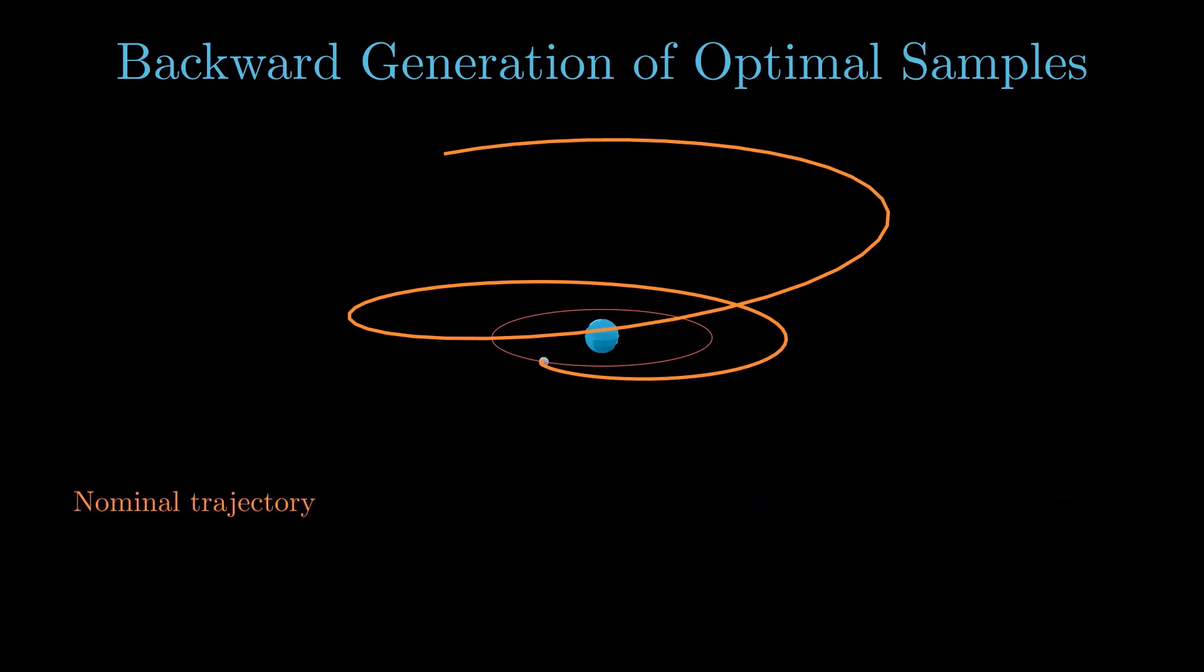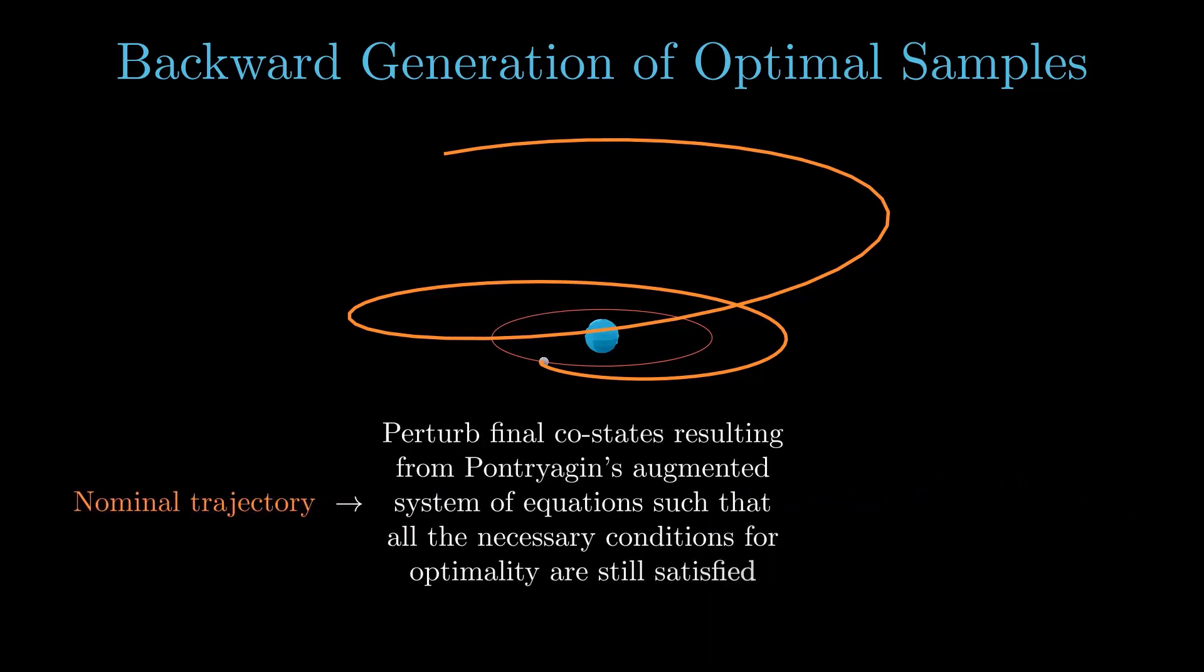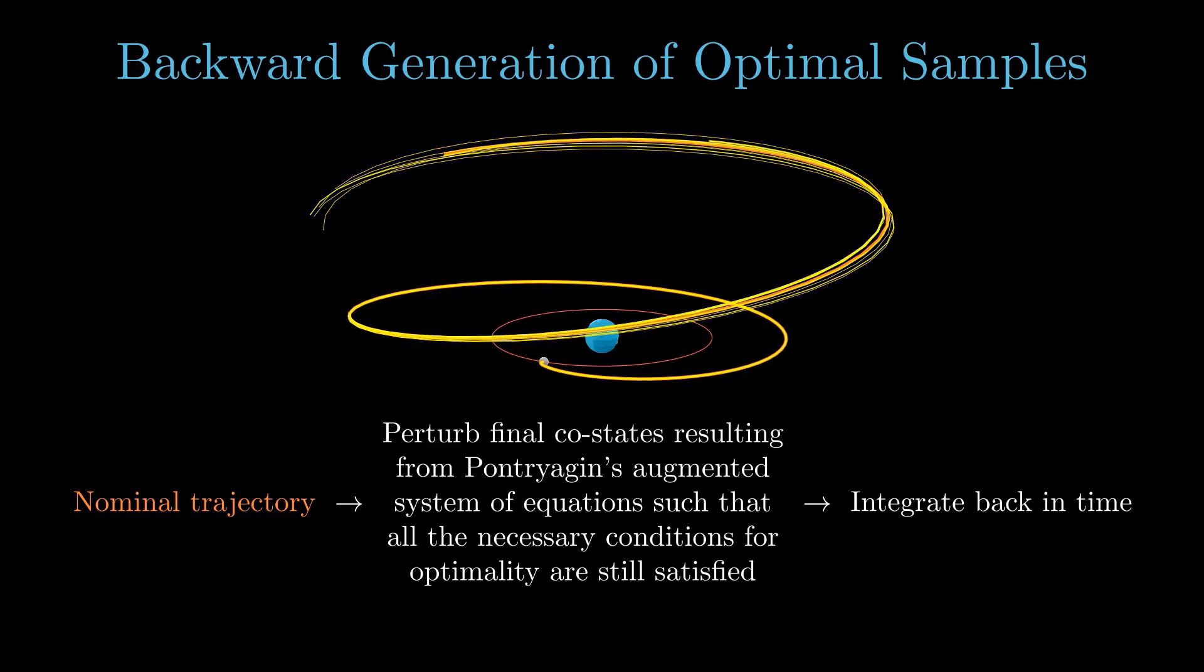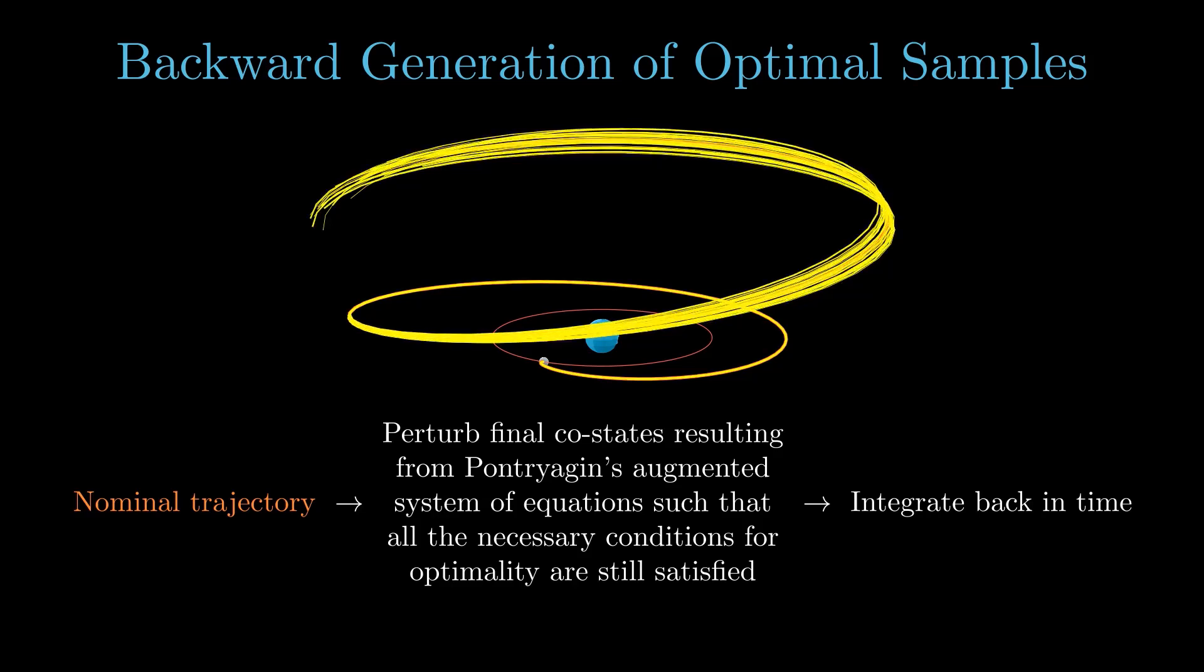The trick is now to perturb the final co-states in the augmented system of equations such that the necessary conditions for optimality are still satisfied. This system, when integrated backward in time, will represent a new optimal trajectory with different initial conditions but the same final states.